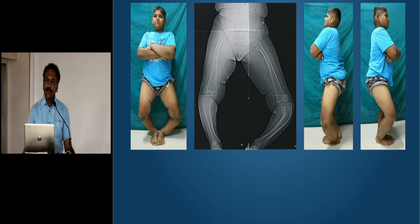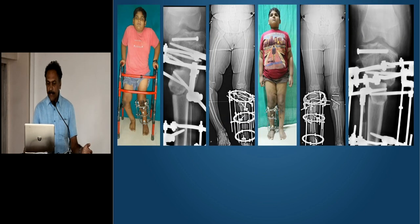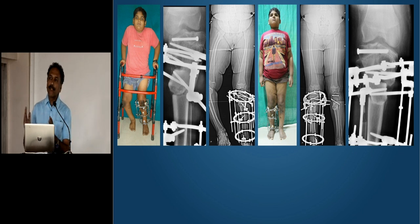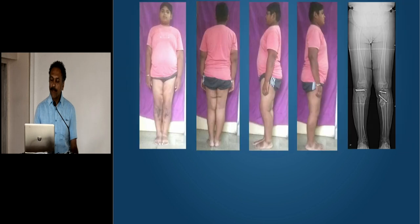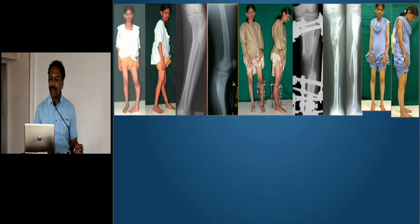What about something as dramatic as Blount's disease? Though not common in India, this can be really troublesome. We can perform a hemi-plateau elevation as well as a distal metaphyseal osteotomy to give the perfect correction needed for the child. Despite the obesity and the complexity and magnitude of the deformity, the circular fixator will never fail you.